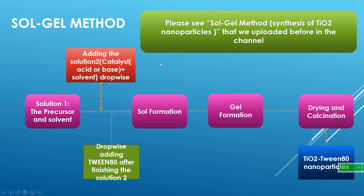I think you are now familiar with the sol-gel method and its steps. If you are not, please see our video on sol-gel synthesis of TiO₂ nanoparticles uploaded previously on the channel. The important point is that you should add your surfactant — in this case, Tween 80 — after finishing solution 2 dropwise. Your final product is TiO₂/Tween 80 nanoparticles.